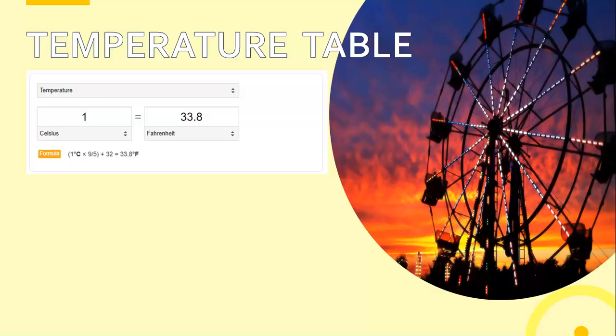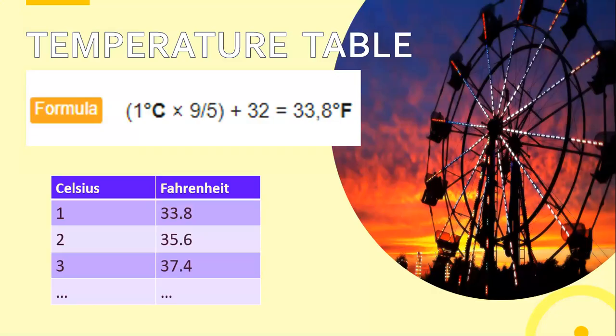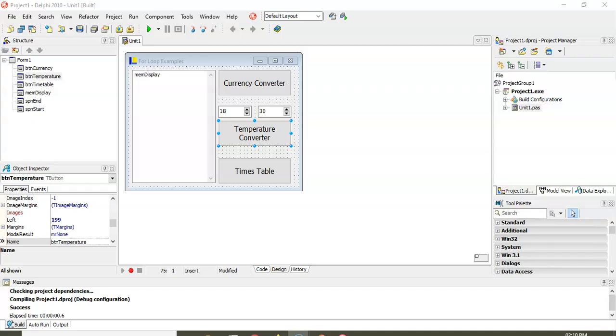Let's look at another example — temperature. One degree Celsius equals 33.8 degrees Fahrenheit. The formula is: take degrees Celsius, multiply by nine, divide by five, then add 32, and that gives the Fahrenheit value. In South Africa we use Celsius and in America they use Fahrenheit. We want a table showing each Celsius value with its Fahrenheit equivalent.